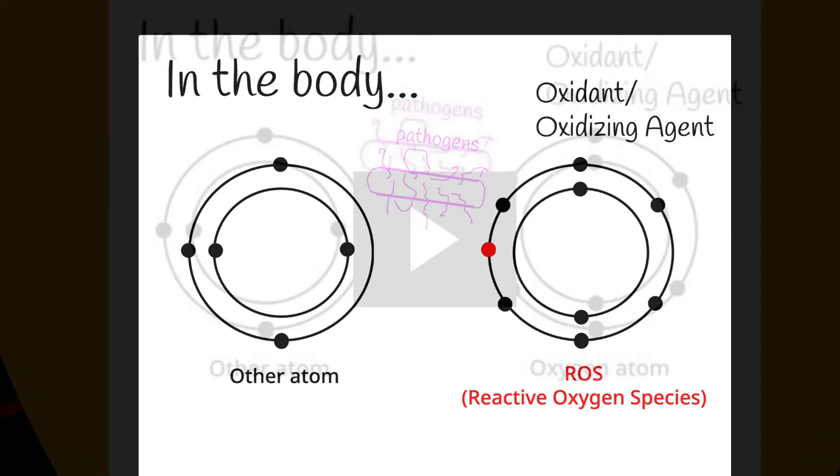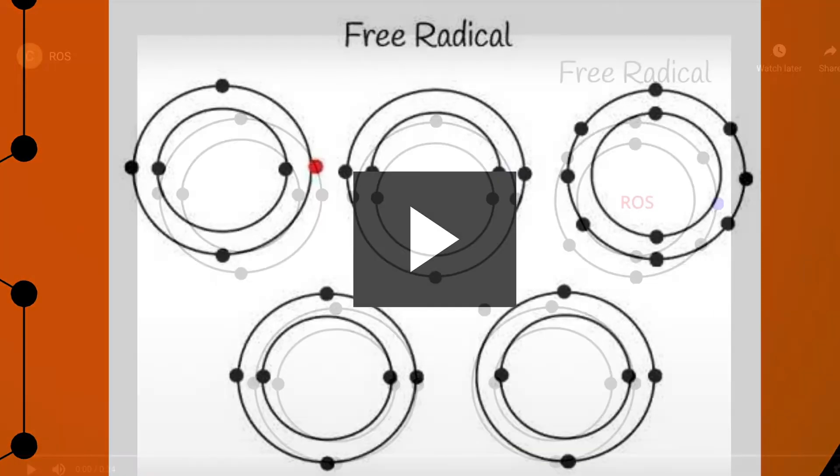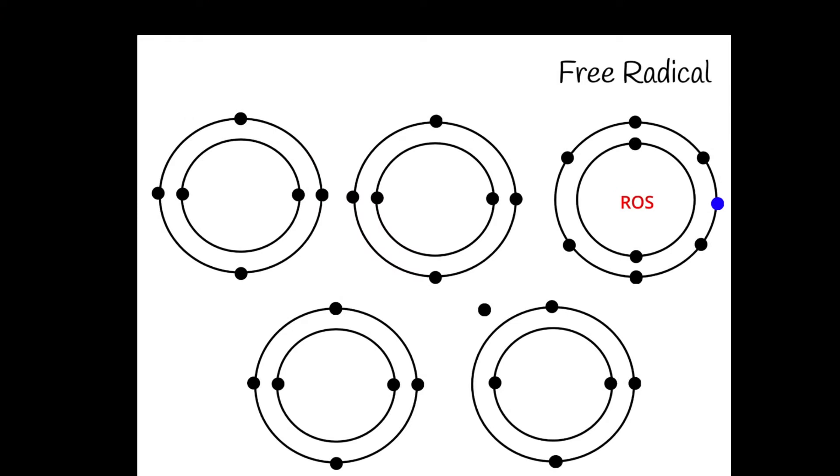ROS, a product of an oxidation reaction, are in fact also a form of oxidants themselves. They are oxygen containing free radicals, which are molecules that contain an unpaired electron and are therefore highly unstable. Now all atoms strive to become stable and ROS are no exception.